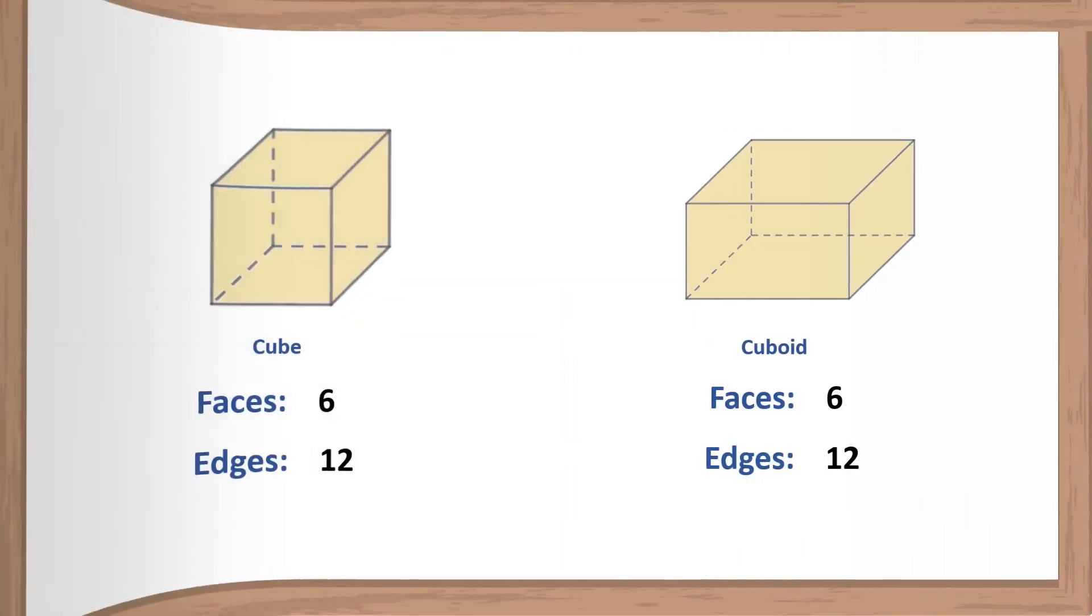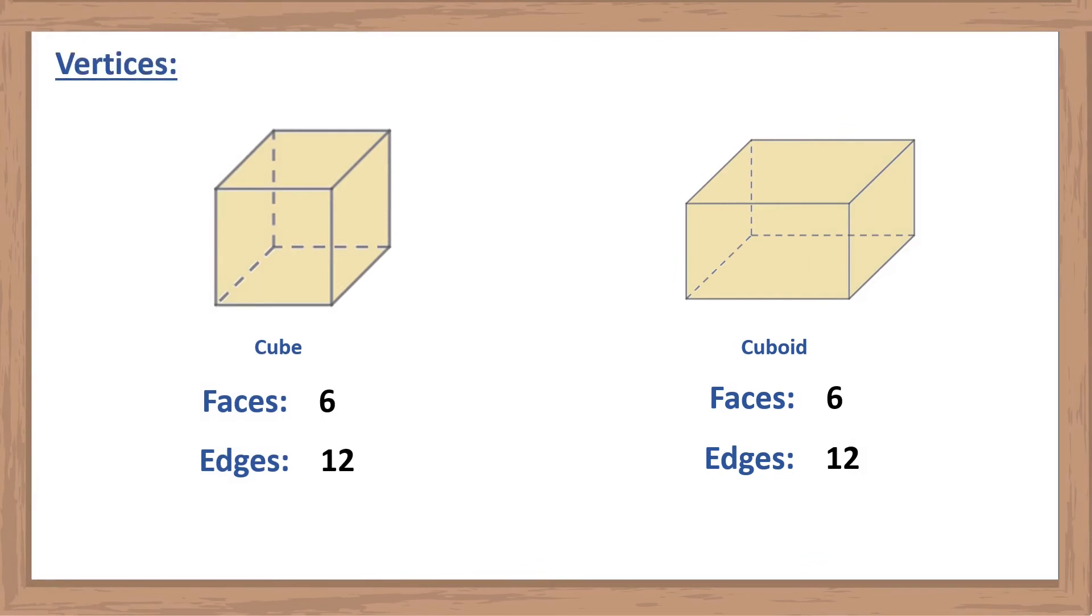Let's count the numbers of vertices of these solids. Vertices are the corners or points of the shape where two or more edges meet. Here three edges meet at one point and one of the cube's vertices.